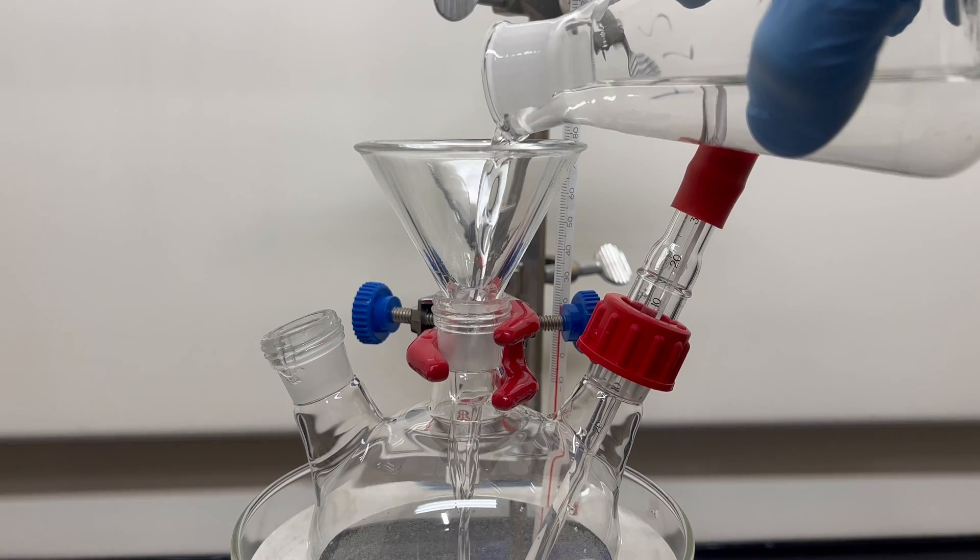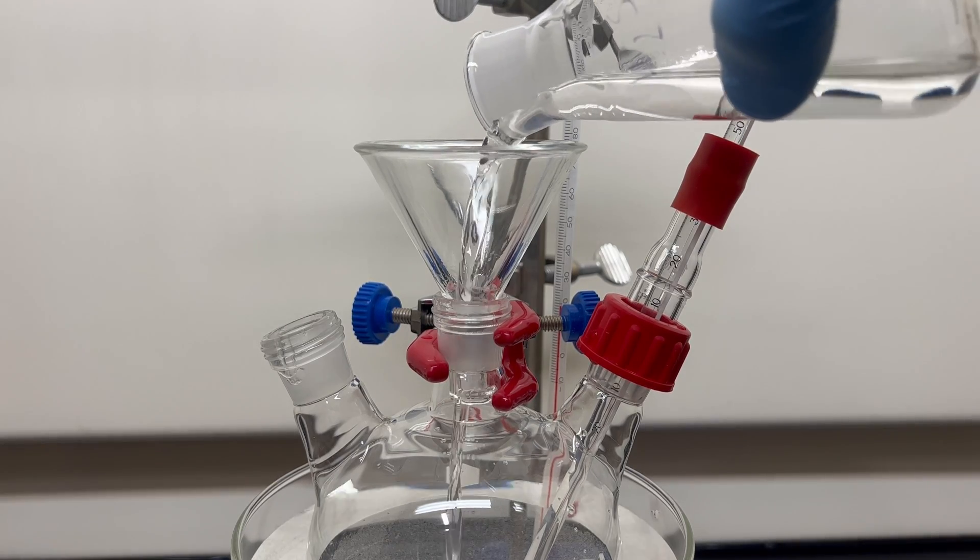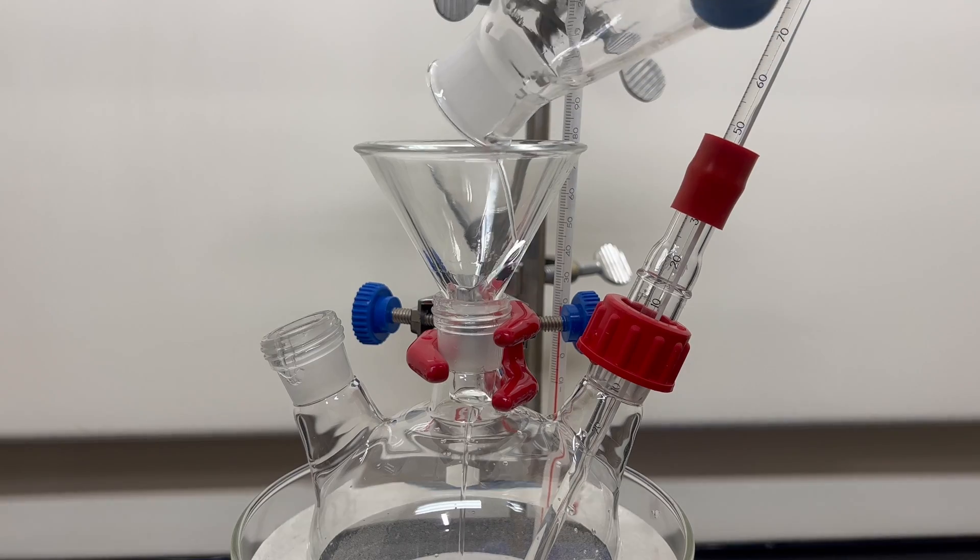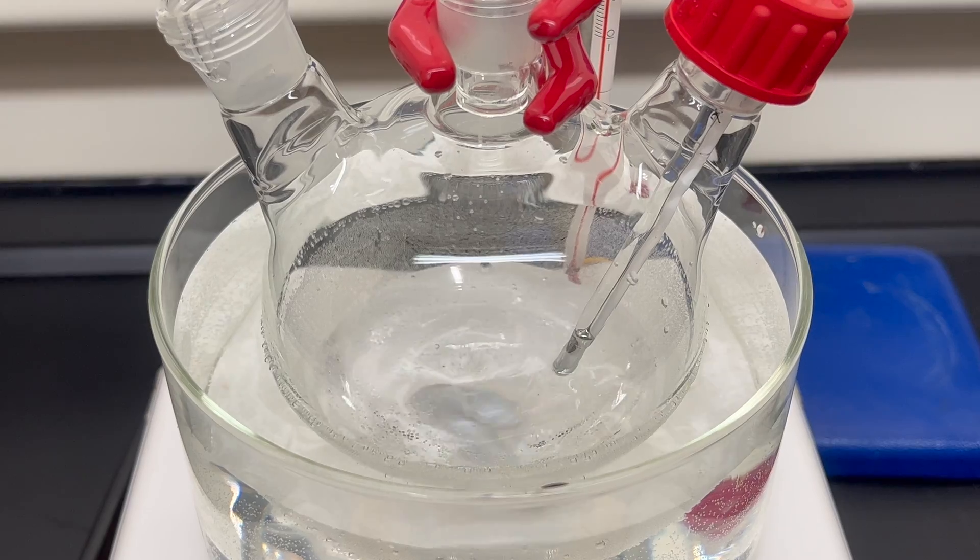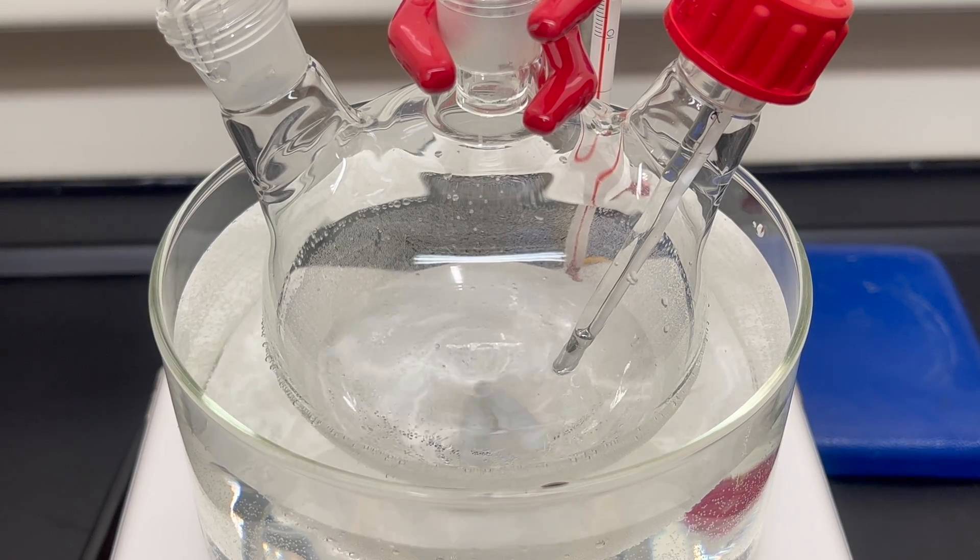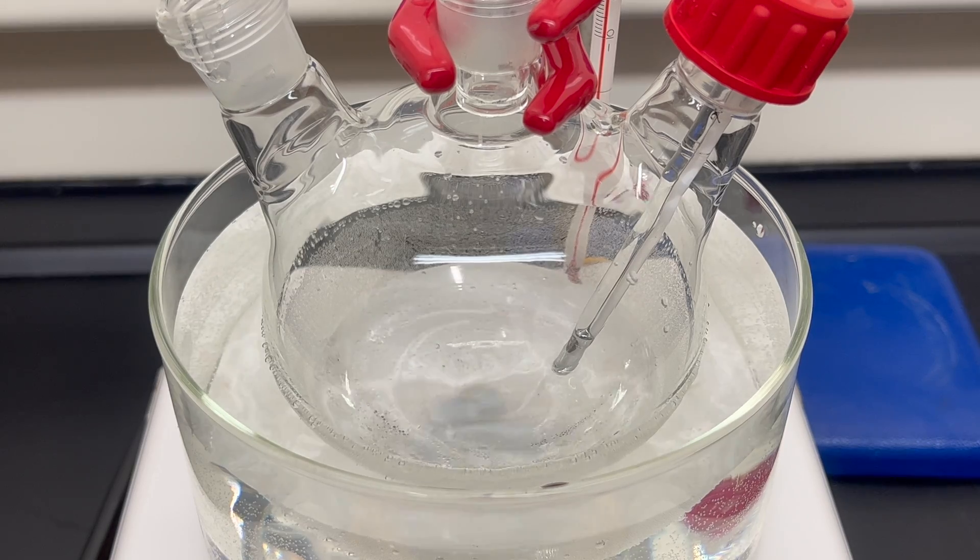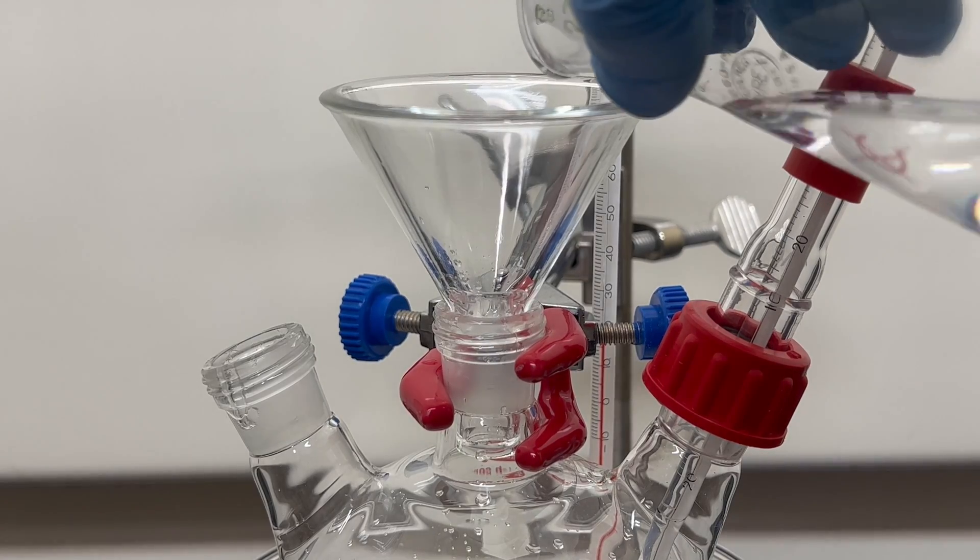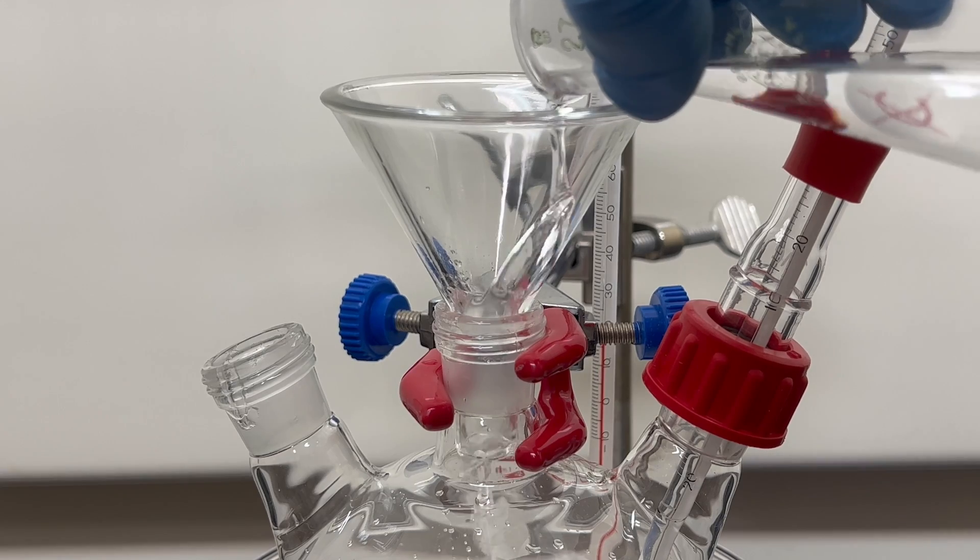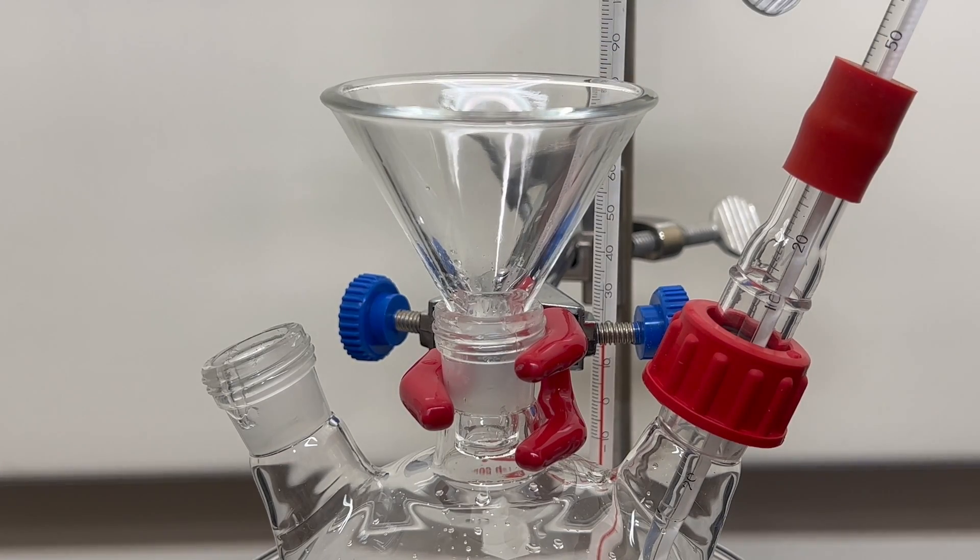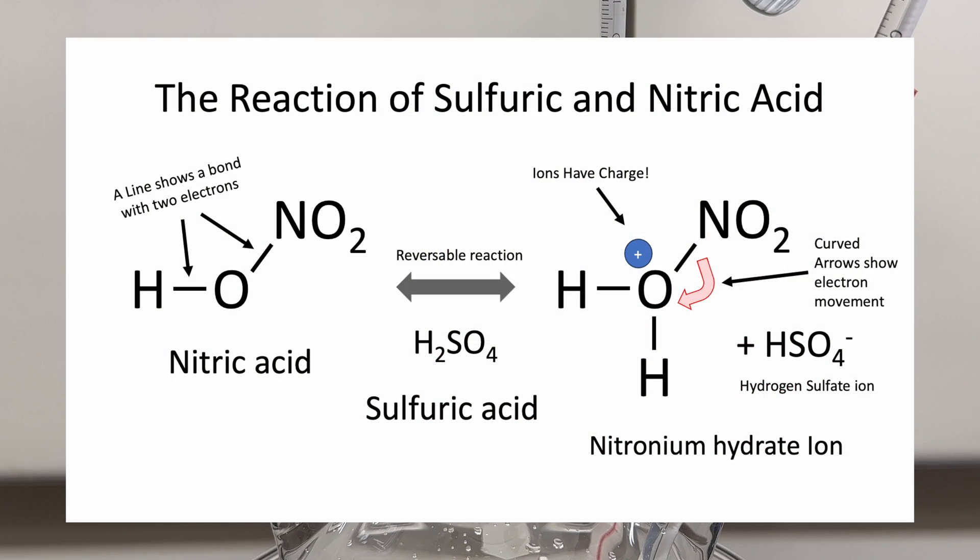To begin, 80 milliliters of concentrated sulfuric acid is added to a 500 milliliter round bottom flask in a water bath, and a stir bar is put into the flask. Stirring is started and 70 milliliters of nitric acid is slowly added. An exothermic reaction occurs here and needs to be added slowly.